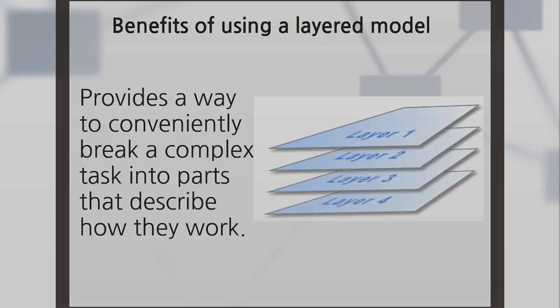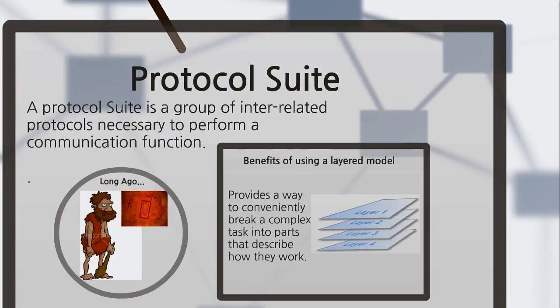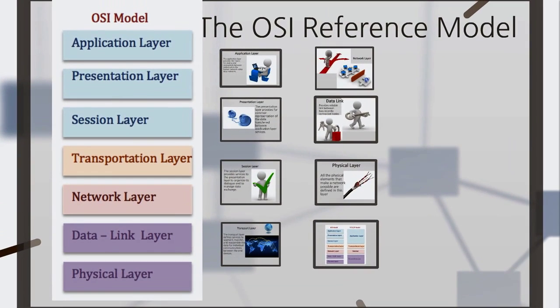One of them is the OSI, which refers to Open System Interconnection, which defines network communication in seven layers: Application layer, Presentation layer, Session, Transportation, Network, Data, and Physical layers.